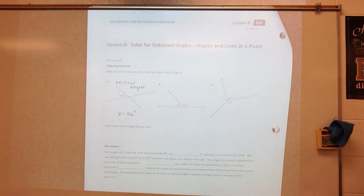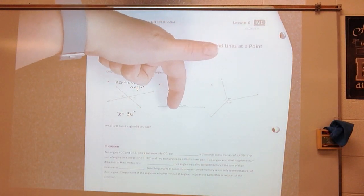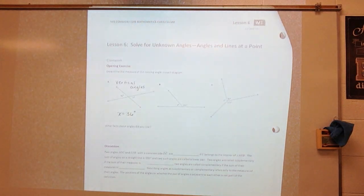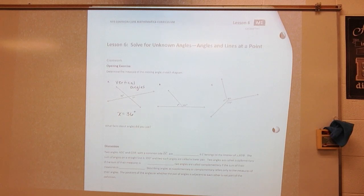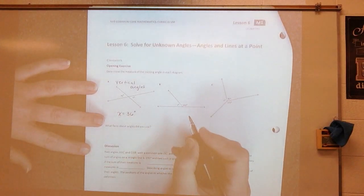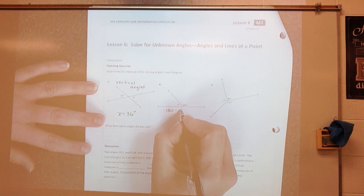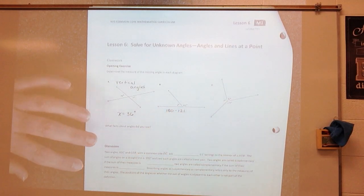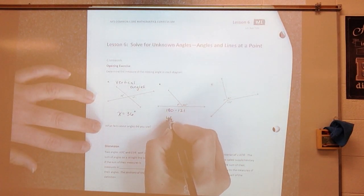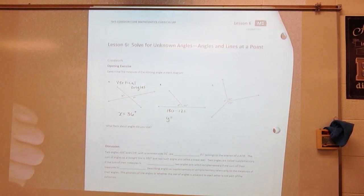Let's look at this one. What do we know? These two angles form a straight line. A straight line is 180 degrees. So therefore, 180 minus 121 would tell me that y is equal to 59.